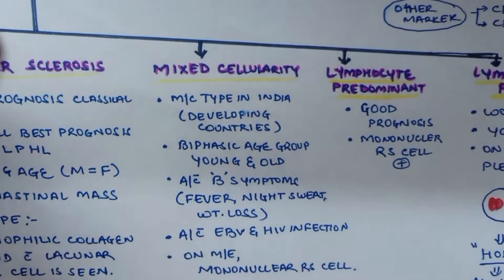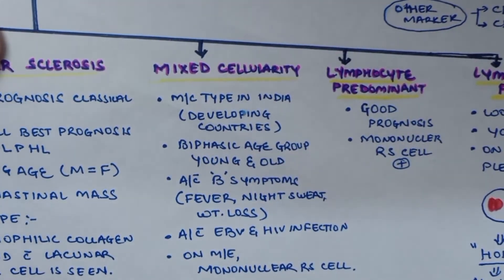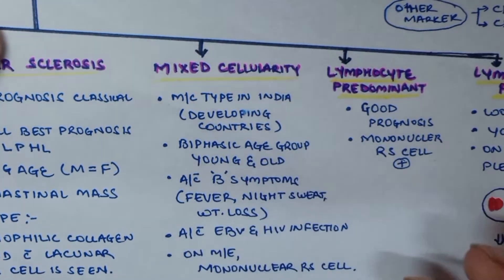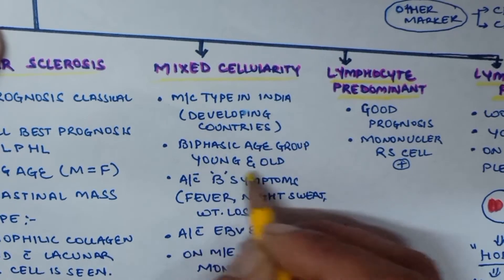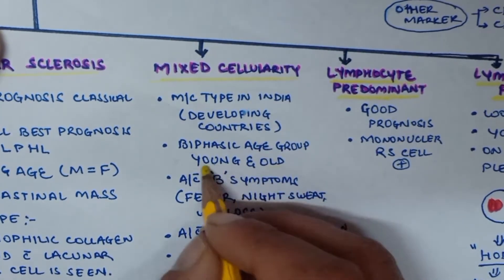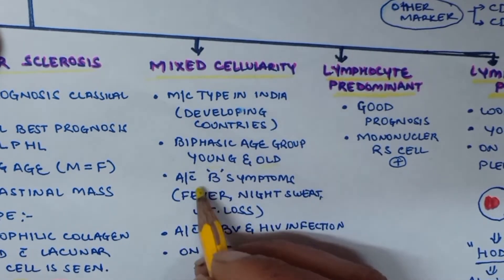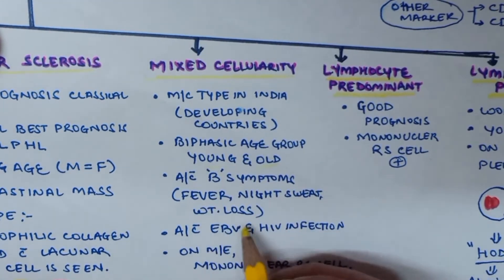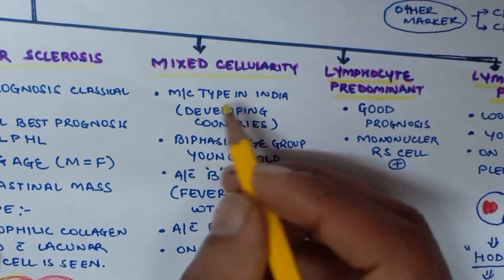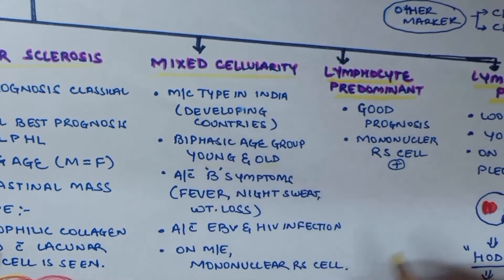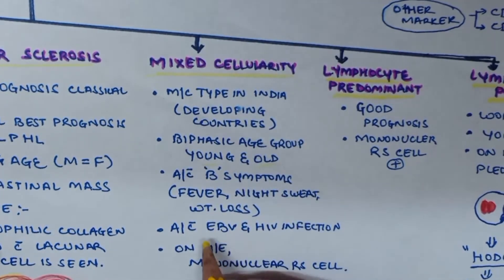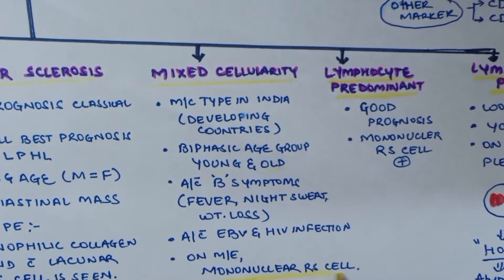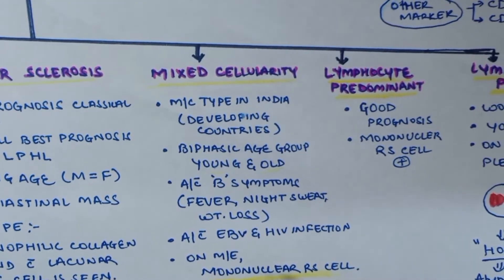Mixed cellularity is the most common type in India and developing countries. It has a biphasic age group distribution, affecting both young and old. It is associated with B symptoms — fever, night sweats, weight loss — and also associated with Epstein-Barr virus and HIV infections. On microscopic examination, mononuclear Reed-Sternberg cells are seen.